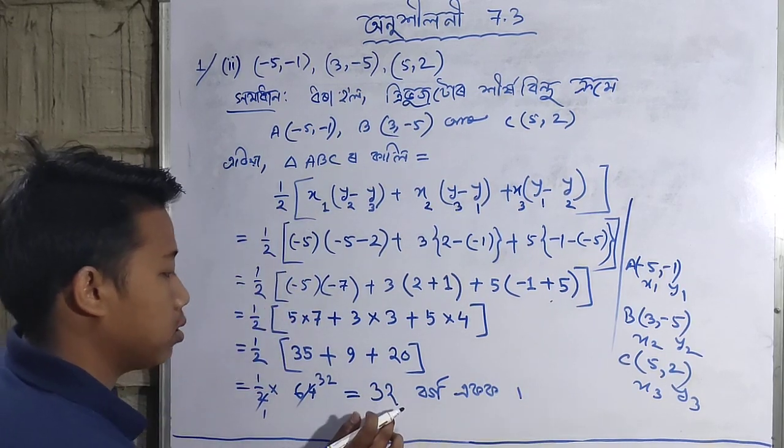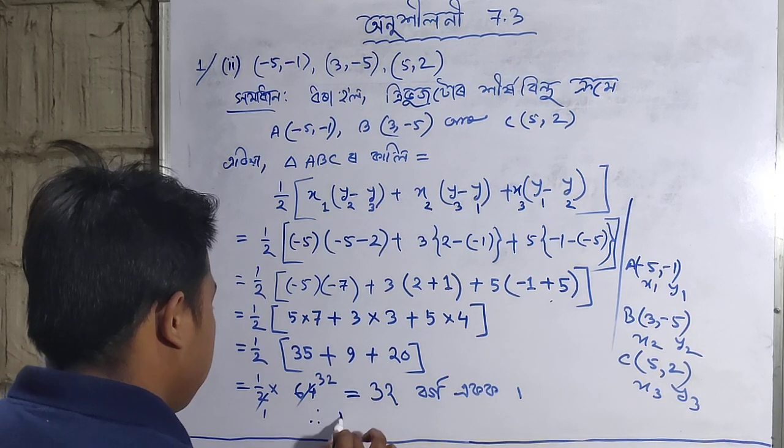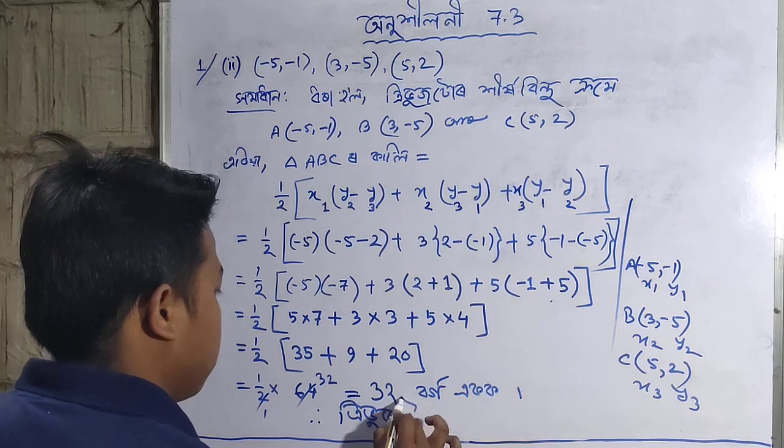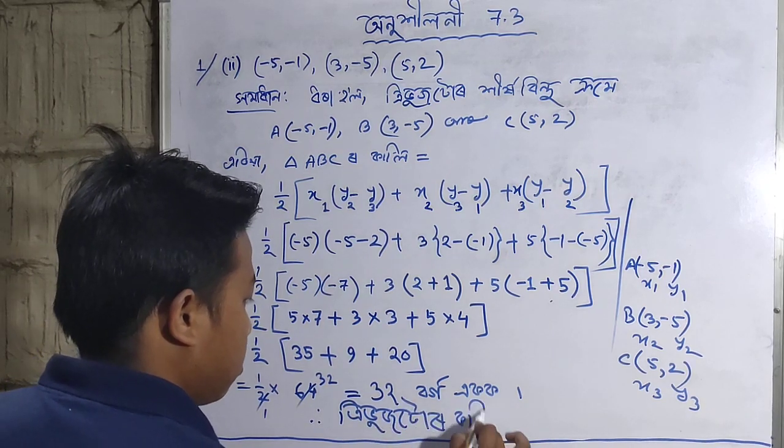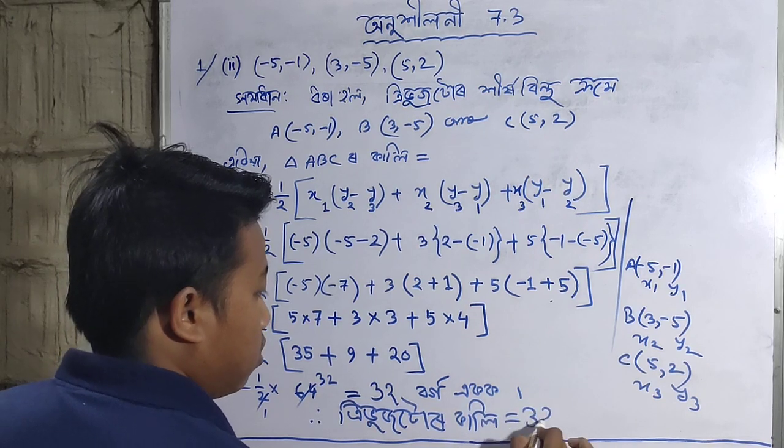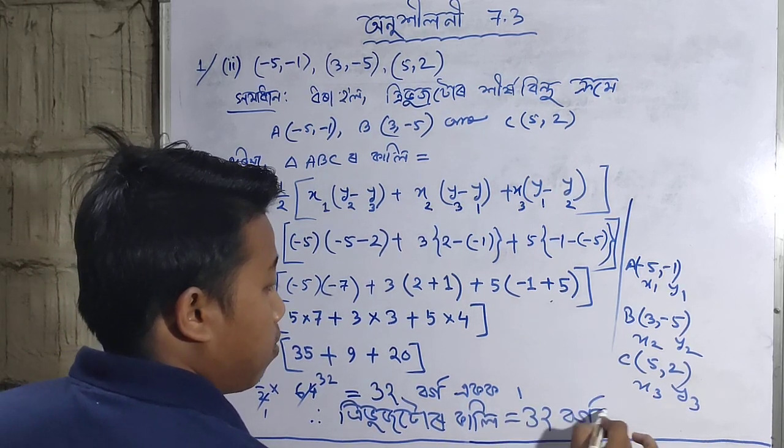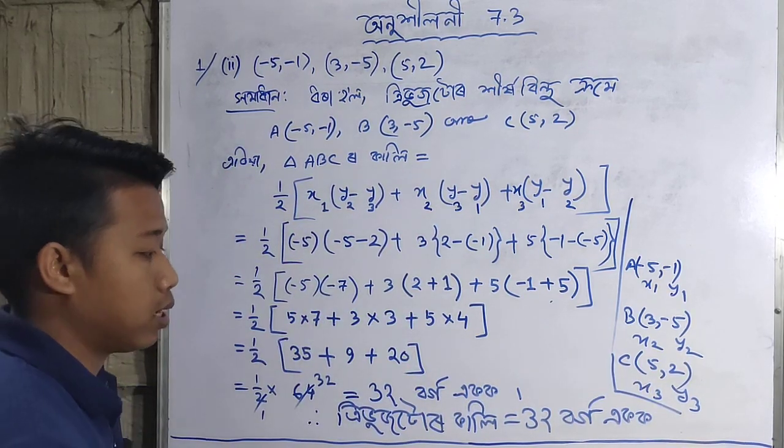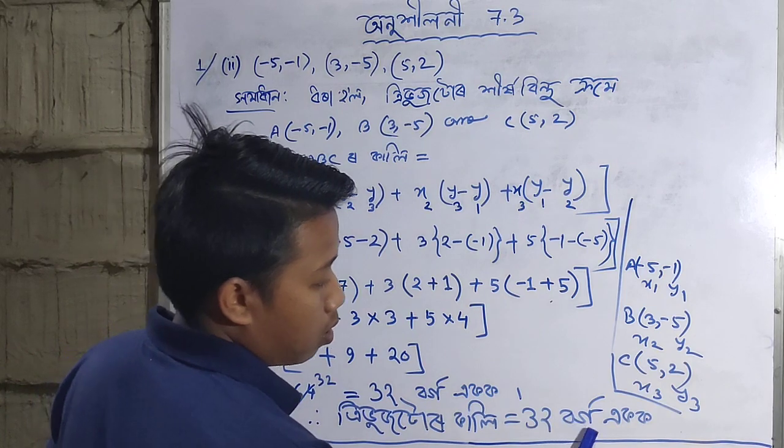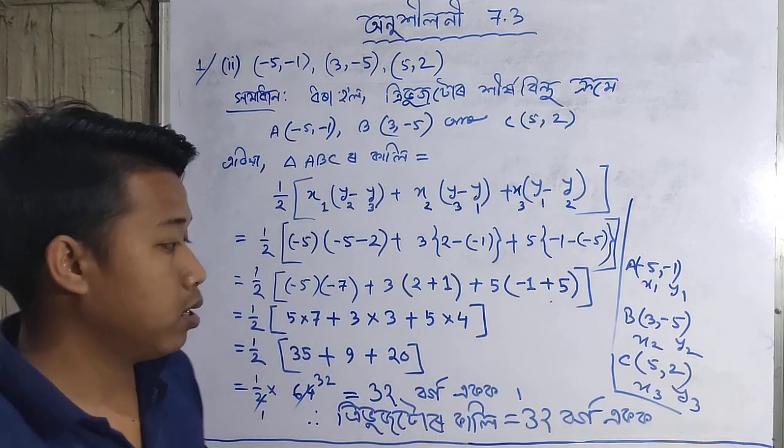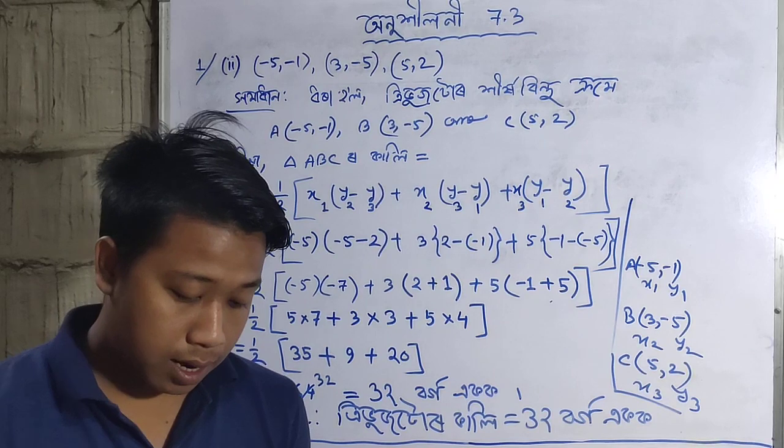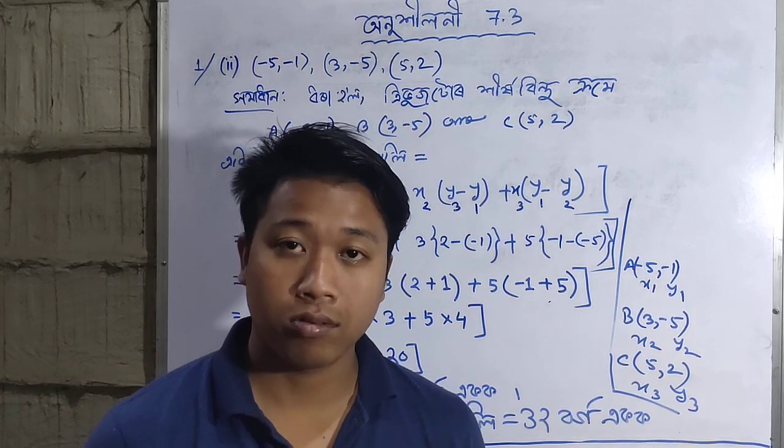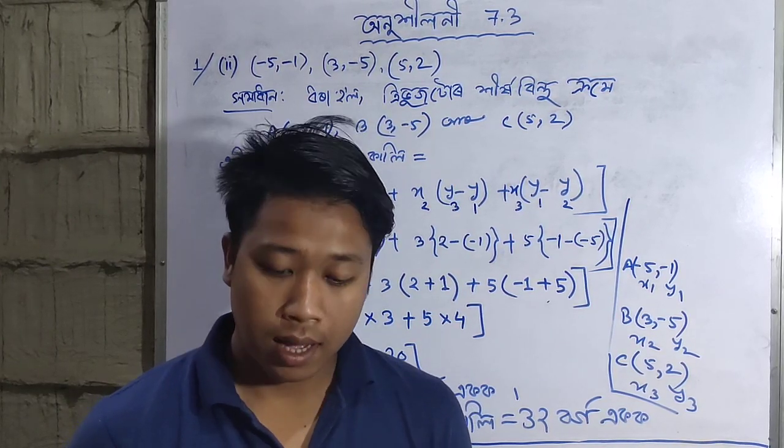The final answer for this triangle area is 32. If you liked this video, please like and subscribe to the channel. Click the bell icon to get notifications for new videos. Thank you.